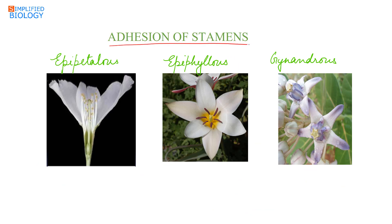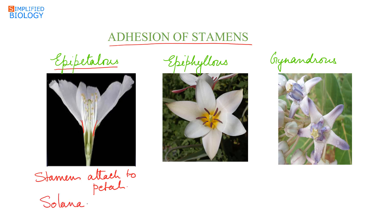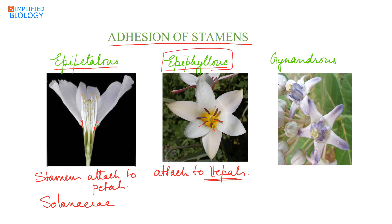Adhesion of stamens means attachment of stamens to other parts of the flower. Epipetalous means the stamens are attached to the petals — this is the characteristic of family Solanaceae, the potato or brinjal family. Epiphyllous means stamens are attached to tepals. Flowers having a single accessory whorl are referred to as perianth and their individual units as tepals, so when stamens are attached to tepals it is referred to as epiphyllous — characteristic of family Liliaceae, the lily family.